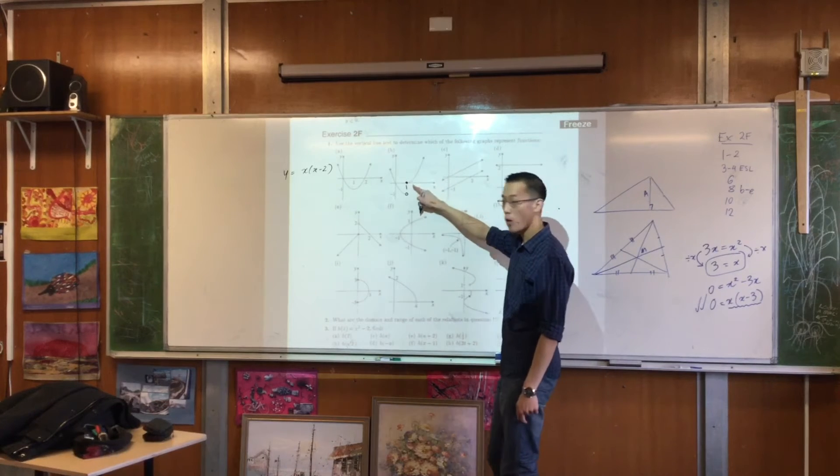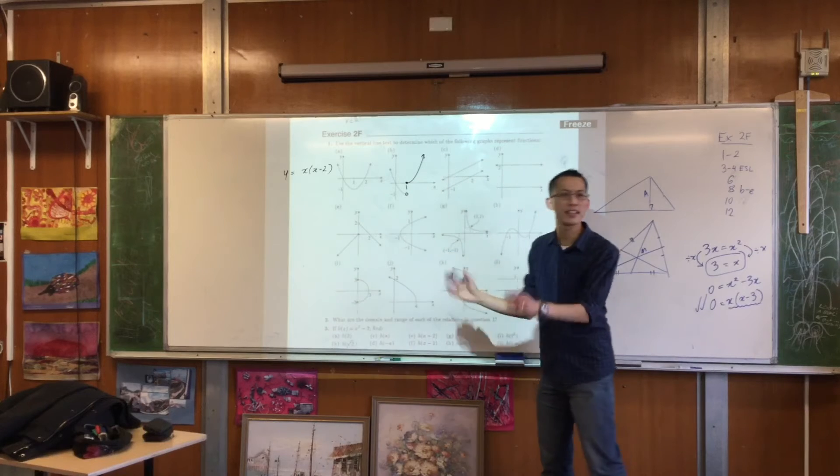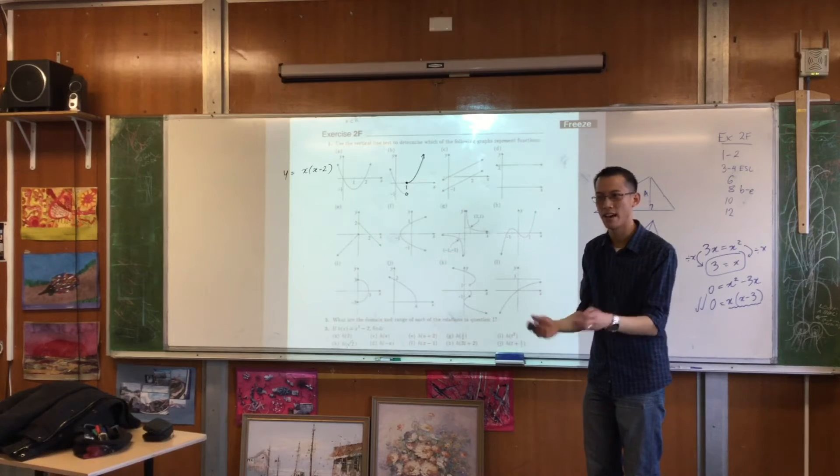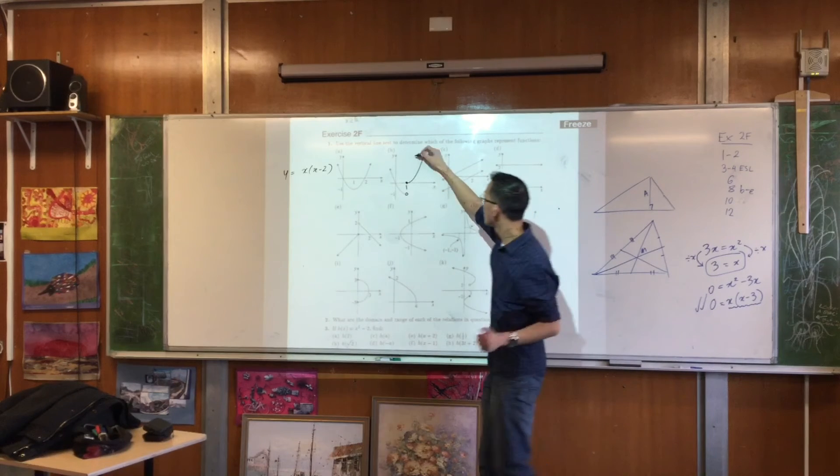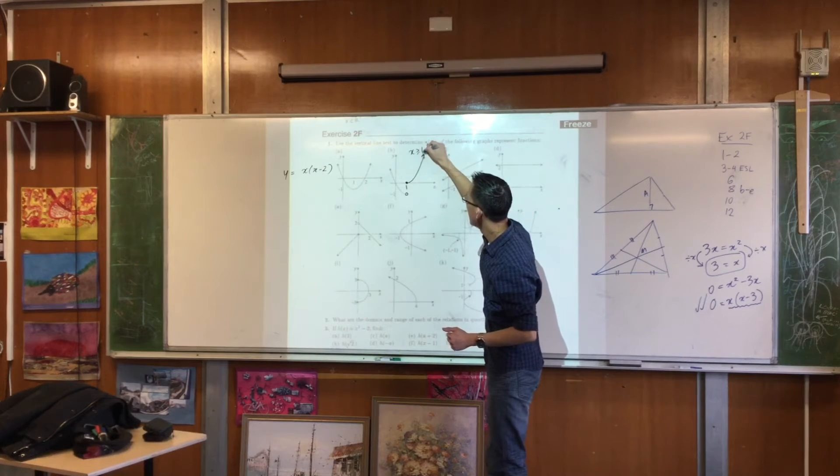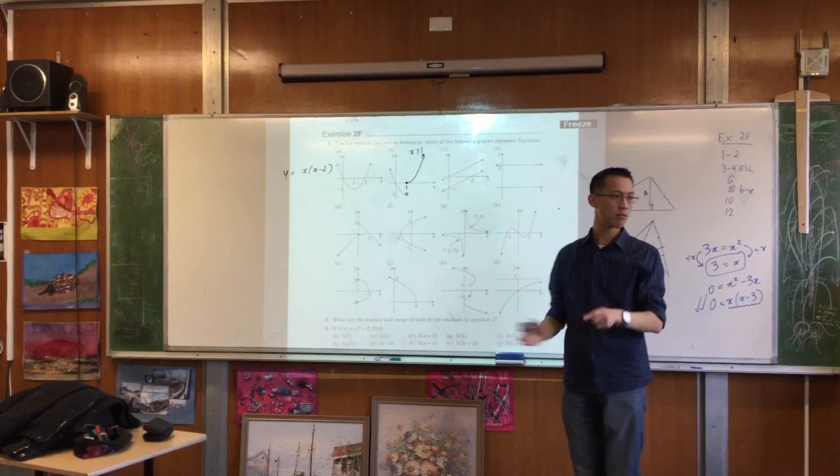In this case the point is one. So just looking at this right-hand part, you go from one, you include one, and then you go all the way. There's nothing to indicate like an asymptote or something to say you've got to stop. That arrow is telling me go all the way. So I would write that part as x is greater than or equal to one.